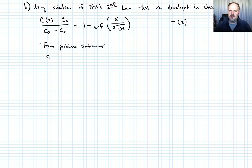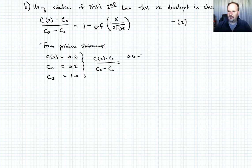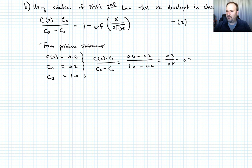From the problem statement: C(x) equals 0.6 weight percent, C-naught equals 0.2 weight percent, and C_s equals 1.0 weight percent. So the left-hand side becomes 0.6 minus 0.2 divided by 1.0 minus 0.2, which equals 0.3 over 0.8, which equals 0.375. We'll call this equation 3.